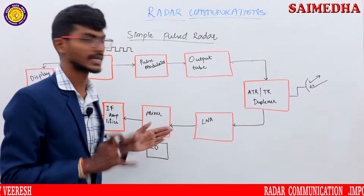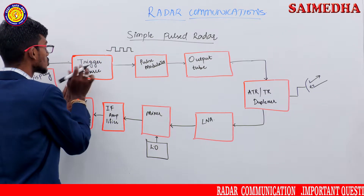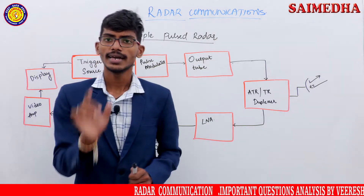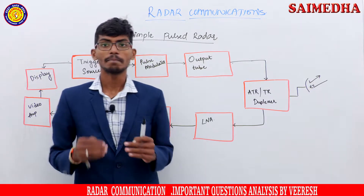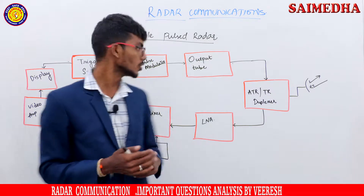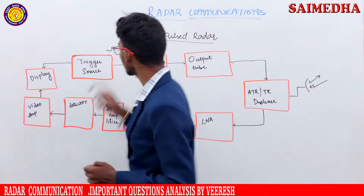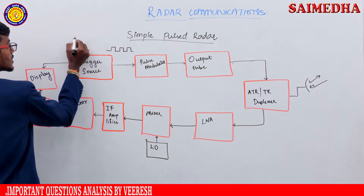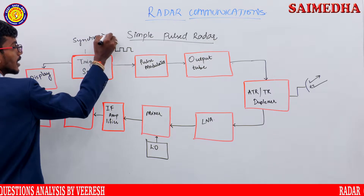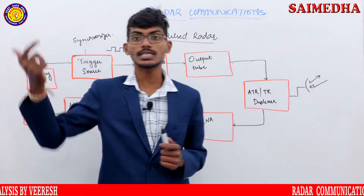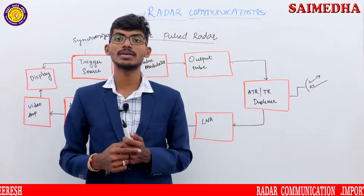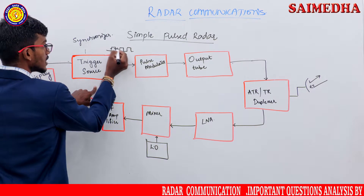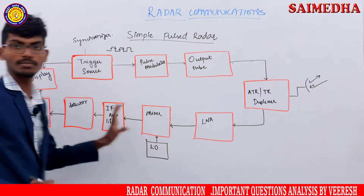Let's start from the transmitter. In the transmitter stage, the first block is the trigger source. The trigger source sets the timing of the pulses — it generates the pulses sent to the pulse modulator. The trigger source is also called a synchronizer. The synchronizer generates a train of pulses based on clock timing, and sends those trigger pulses to the pulse modulator.